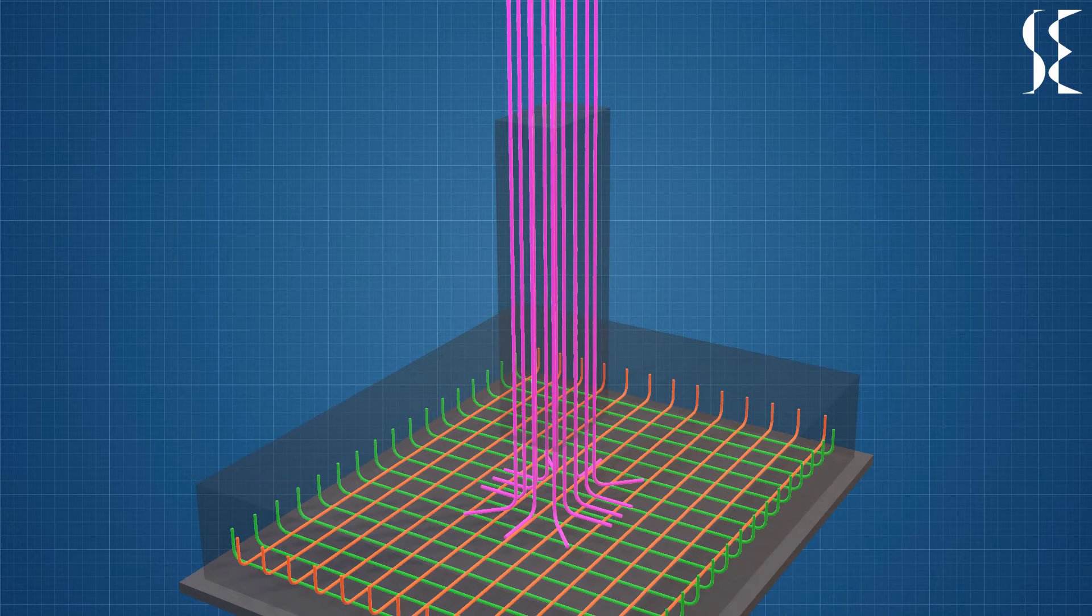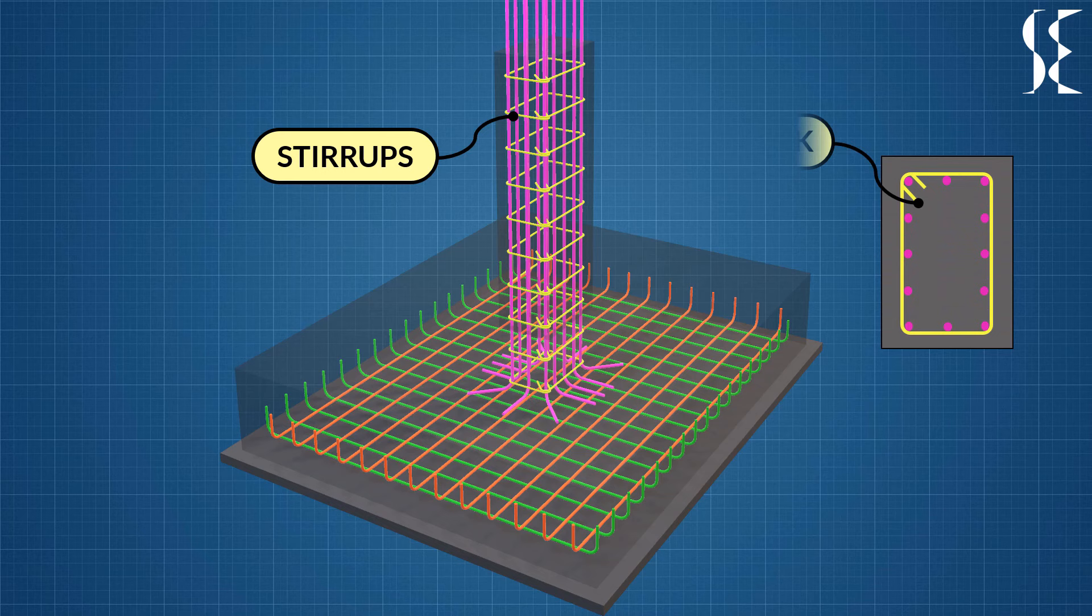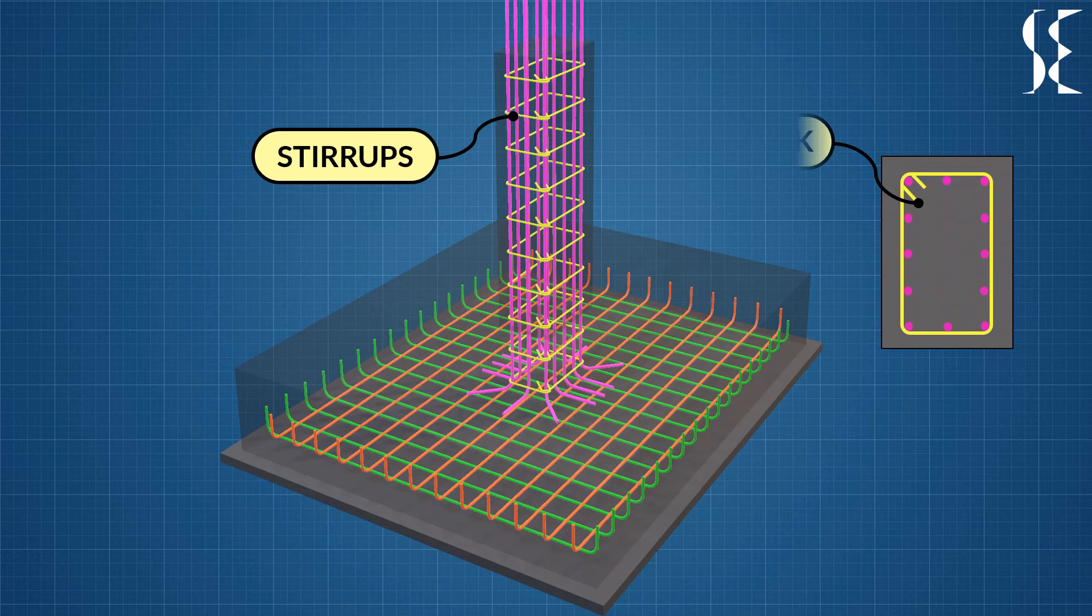Lastly we see stirrups which start right from the bottom of the footing. They have a 135 degree hook which is a must for columns. They tie the column longitudinal reinforcement and resist the shear forces in them.